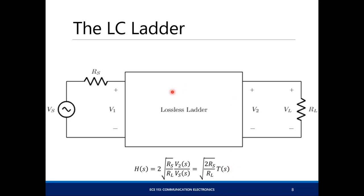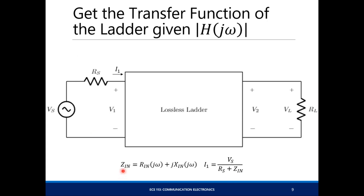Your transfer function of this lossless ladder is equal to 2√(RS/RL) times V2/Vs, where V2/Vs corresponds to the transfer function of the whole circuit. H(S) is the transfer function of the lossless ladder; T(S) is the transfer function of the whole circuit. If we let Zin equal Rin plus jXin, this is a function of frequency because all the elements have an impedance that is frequency-dependent.